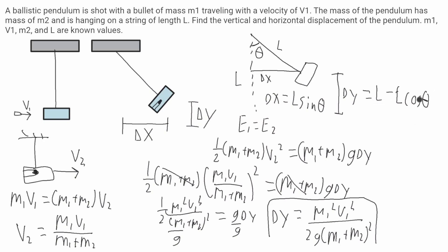So I'm going to get the cosine theta by itself. This will be minus L minus L. It'll be delta y minus L is equal to negative L cosine of theta.